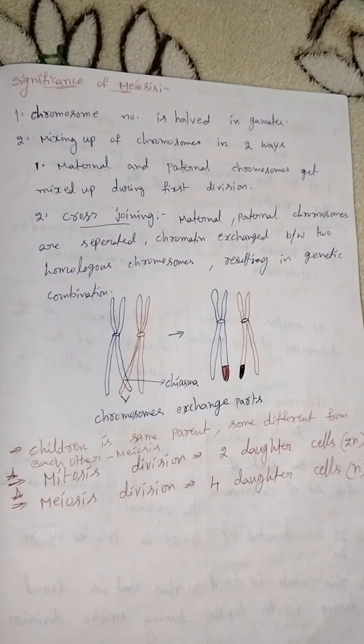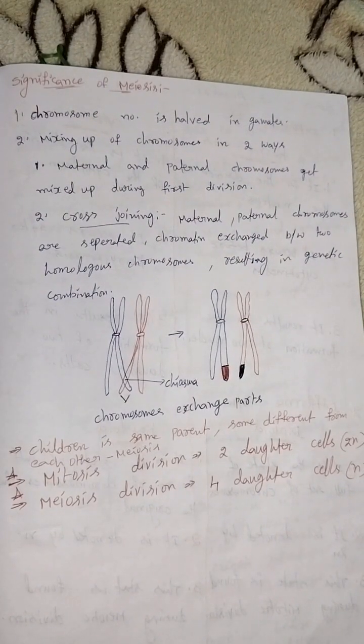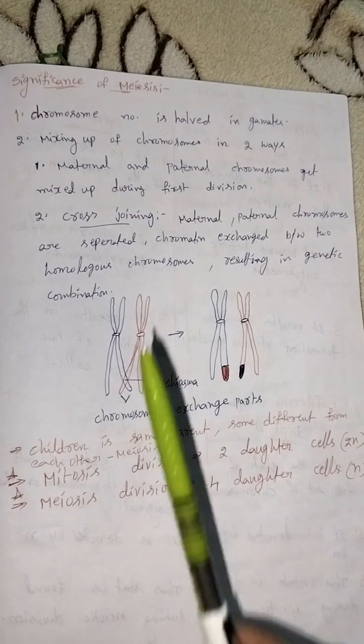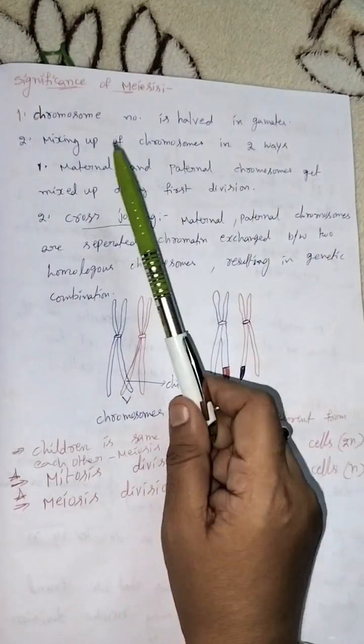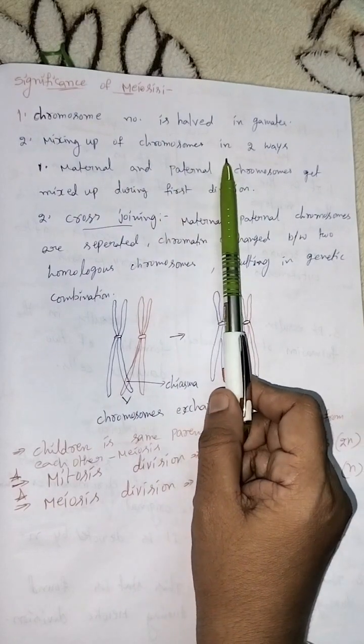What is the importance or significance of meiosis? Chromosome number is halved in the gametes, and mixing up of chromosomes occurs in two ways.